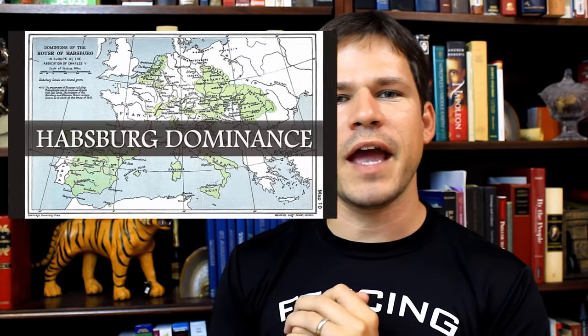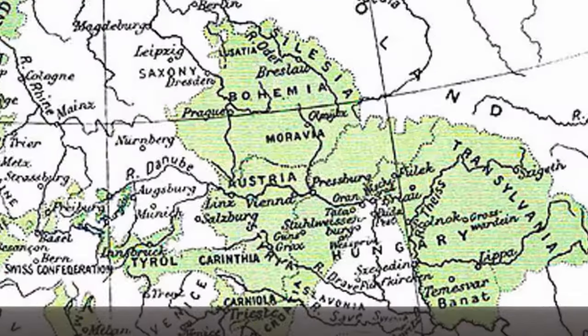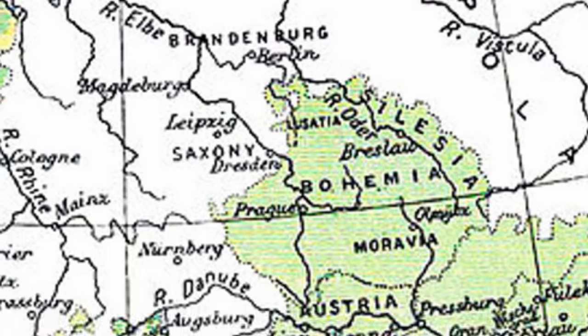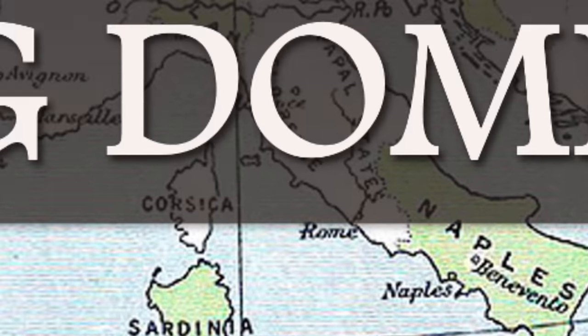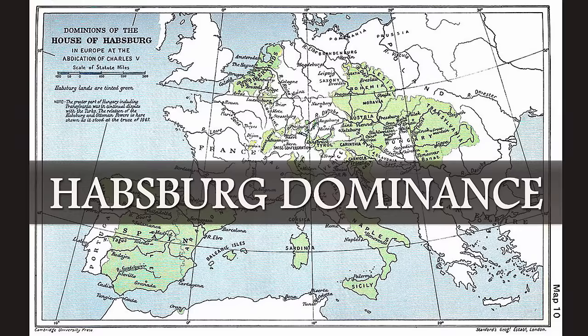Before this, the Habsburgs dominated Europe. If you look at this map from the age of the Reformation, you see Habsburgs in Austria, in Spain, in the Holy Roman Empire, in southern Italy, in the Netherlands — here a Habsburg, there a Habsburg, everywhere a Habsburg. And Louis' wars are going to decrease the influence that the Habsburgs had on the balance of power in Europe.